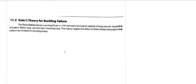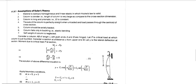Now we come to Euler's theory for buckling failure. Euler was a Swiss mathematician who in 1757 derived a formula for the stability of long columns. According to Euler's theory, long columns fail in buckling only. This theory neglects the effect of direct stresses induced in long columns as compared to bending stresses.